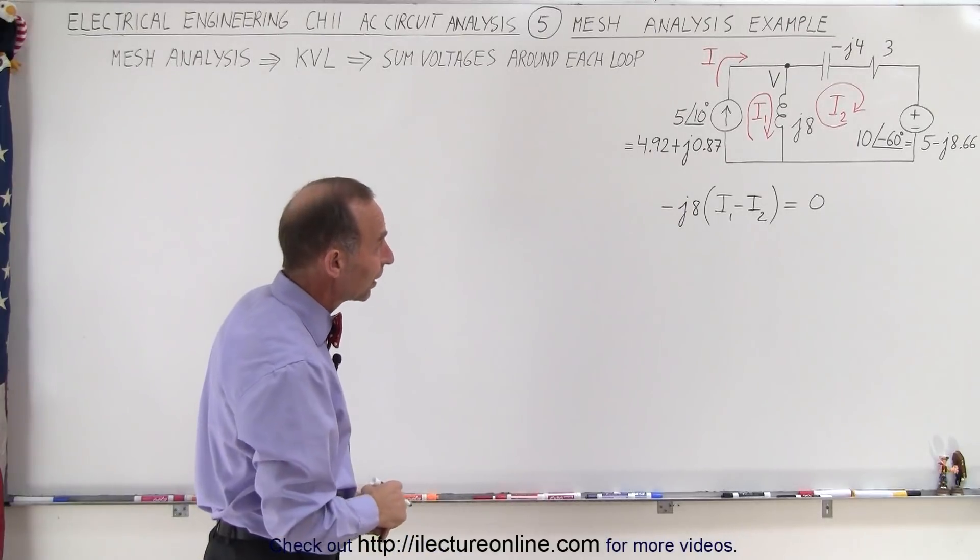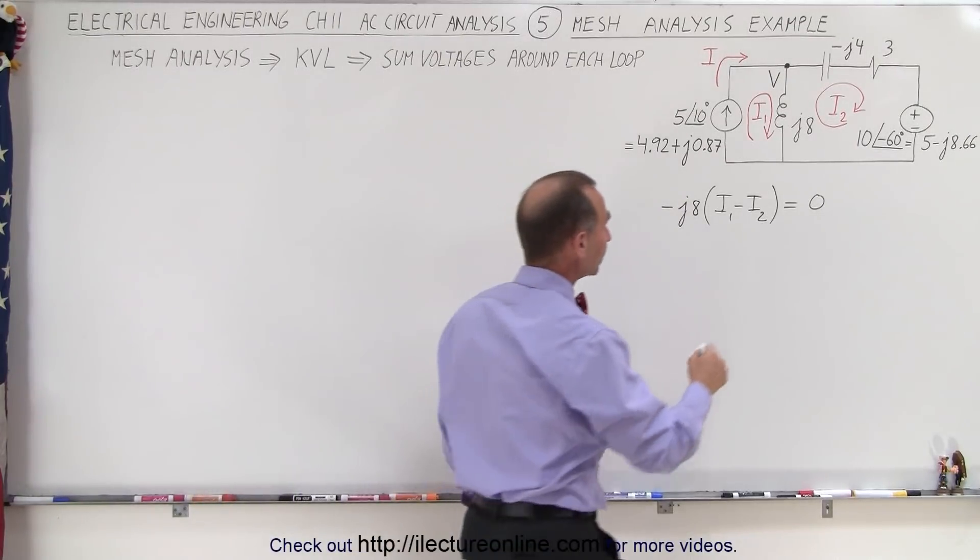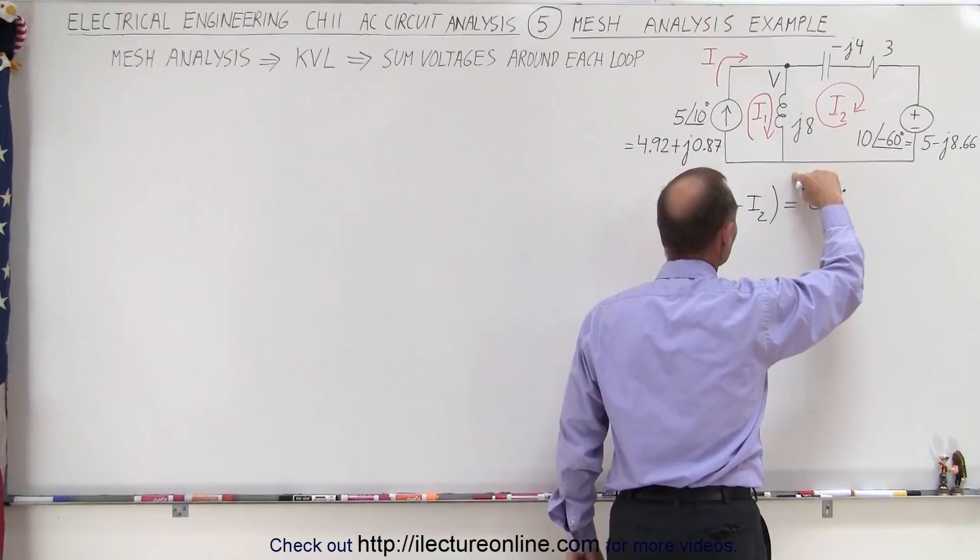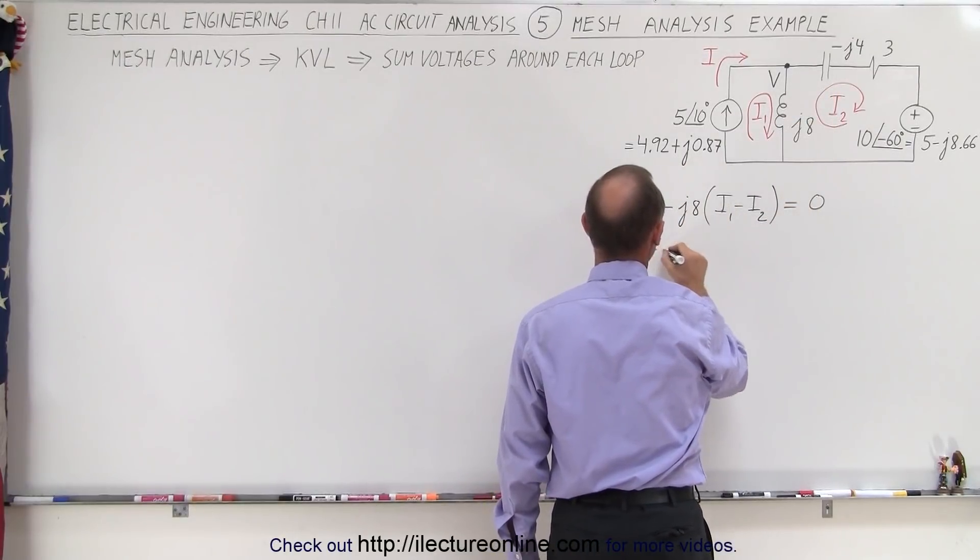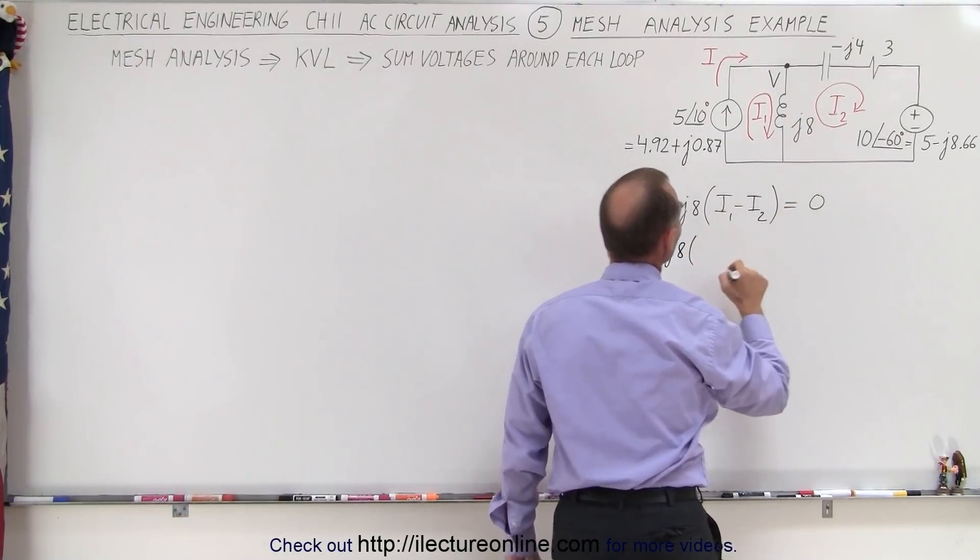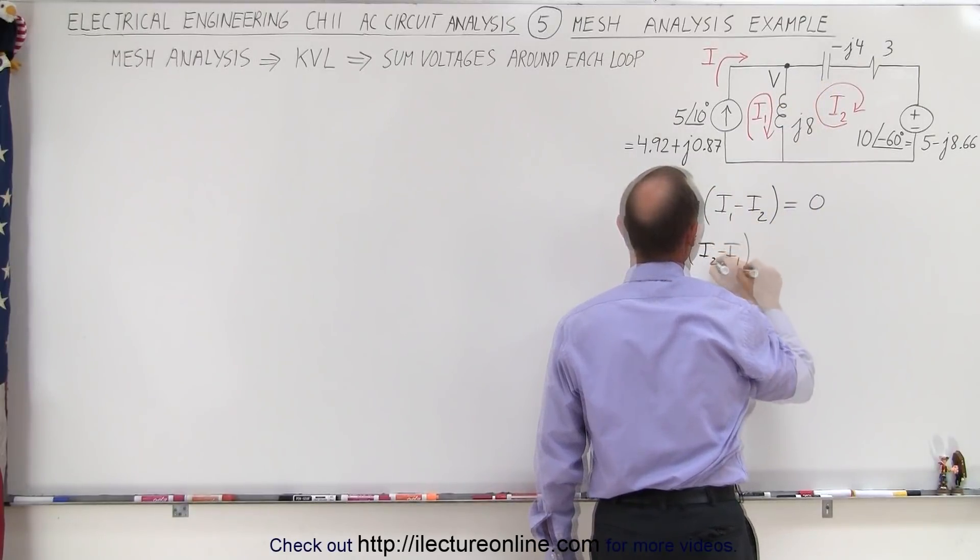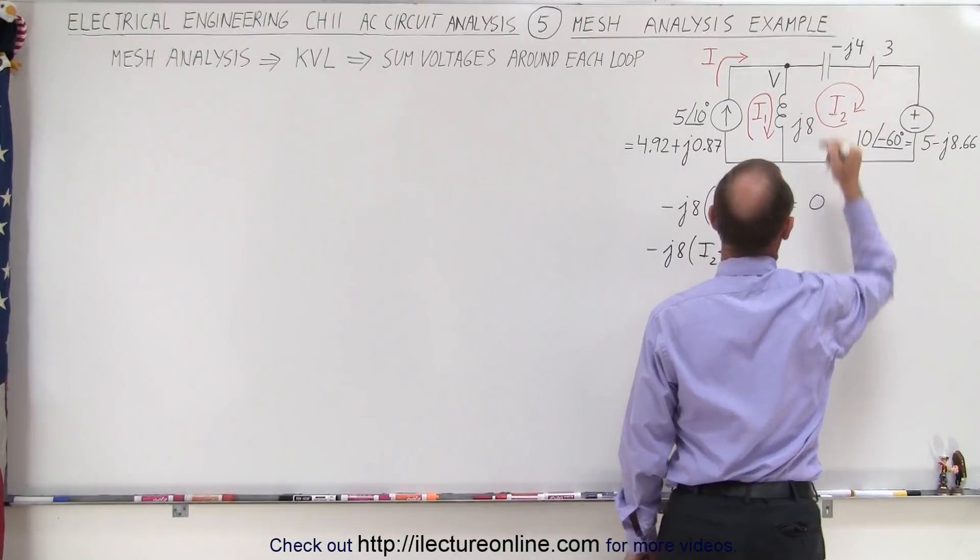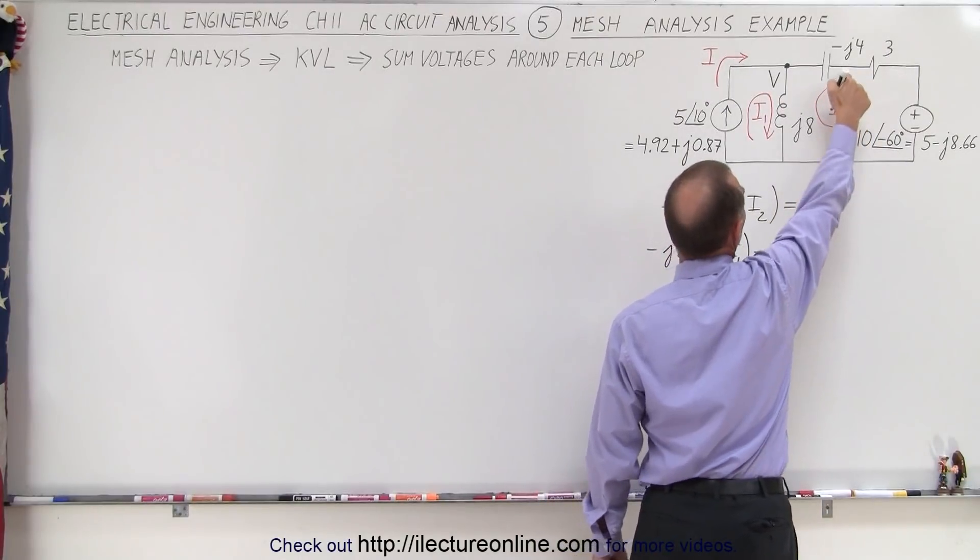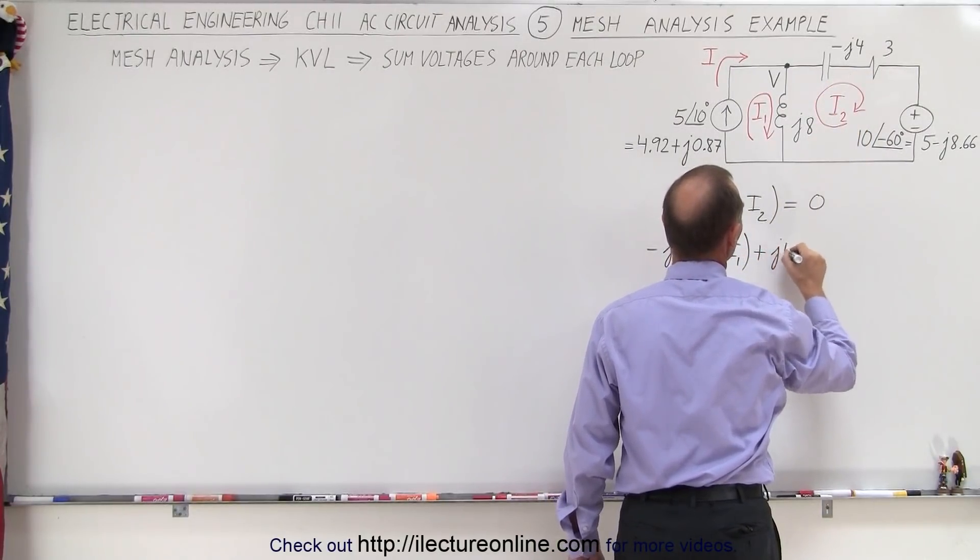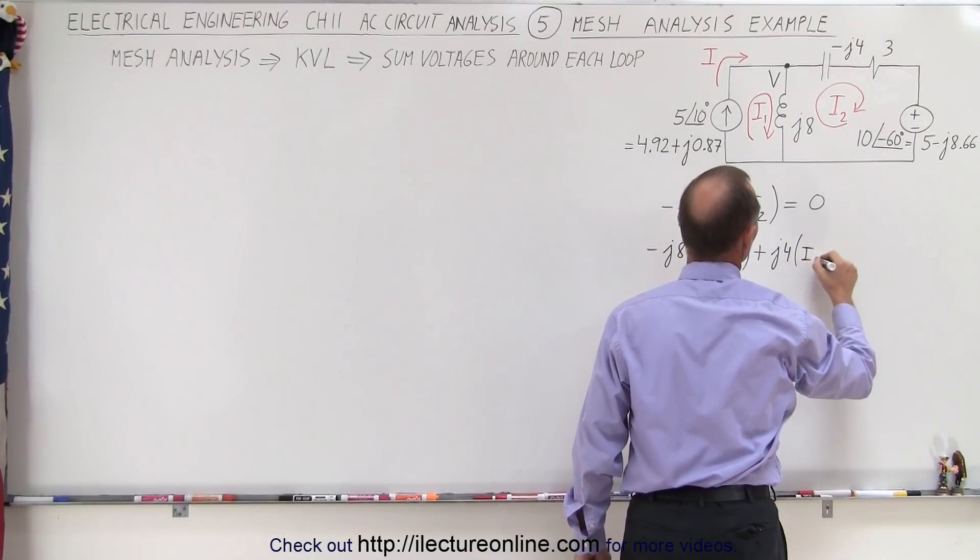And that adds up to zero because that brings us around the entire mesh. So that's a pretty easy equation. On the second mesh starting at this point we're going to go across the inductor. Again we have a voltage drop minus J8 times the current will be I2 minus I1 in this case. Now we have a voltage drop across capacitor that's minus but it's a minus J4 so it becomes plus J4 times the current I2.